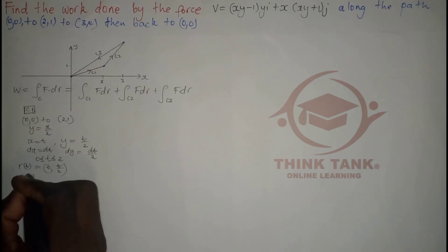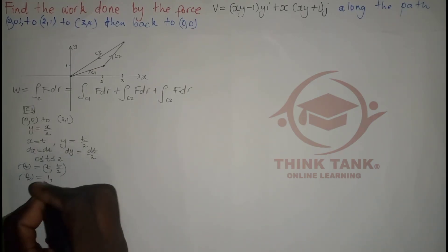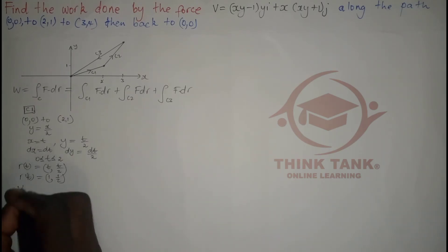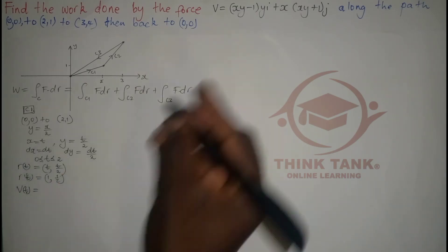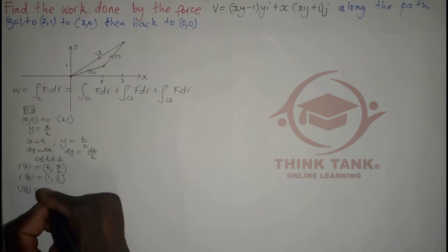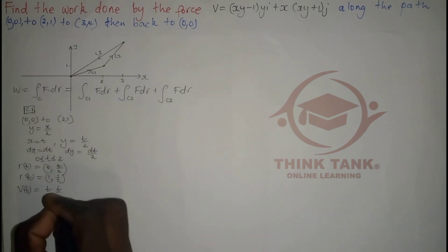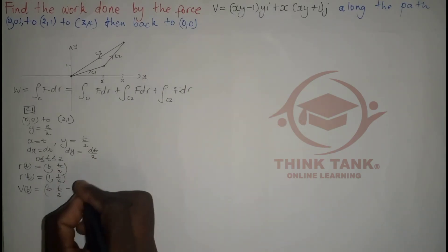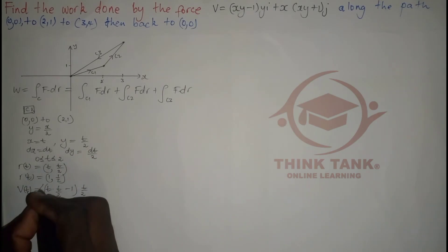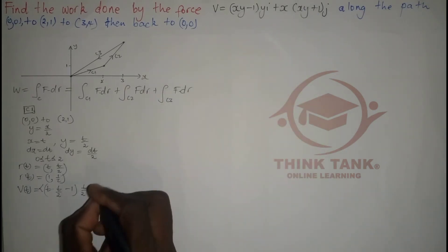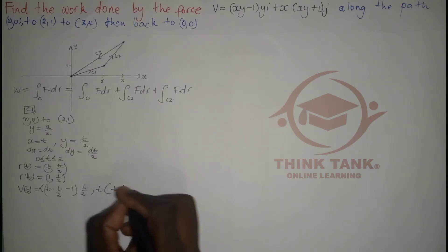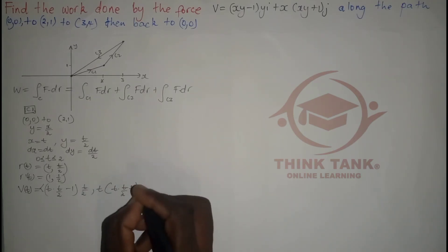Let's differentiate to find r'(t), and we get (1, 1/2). Now let's parameterize the vector field. For x we substitute t, and for y we substitute t/2. The i-component becomes t·(t/2) − 1 times (t/2), and the j-component becomes t·t + (t/2) + 1.